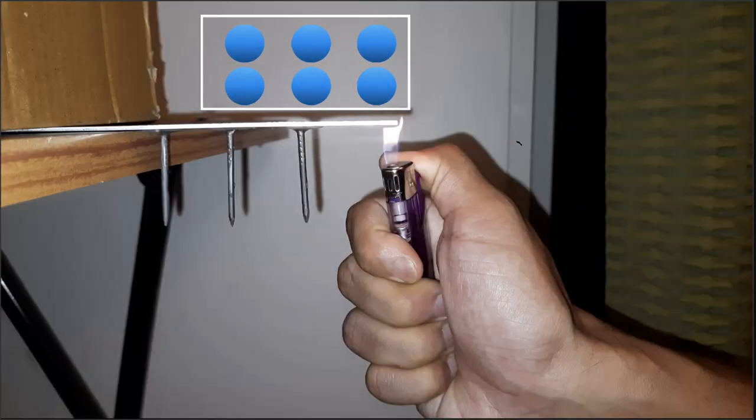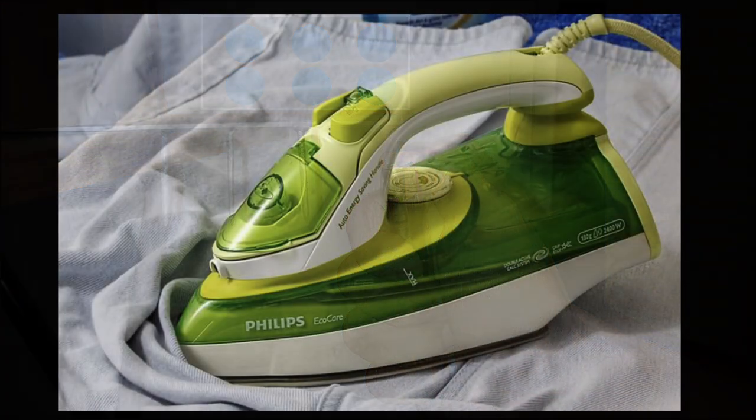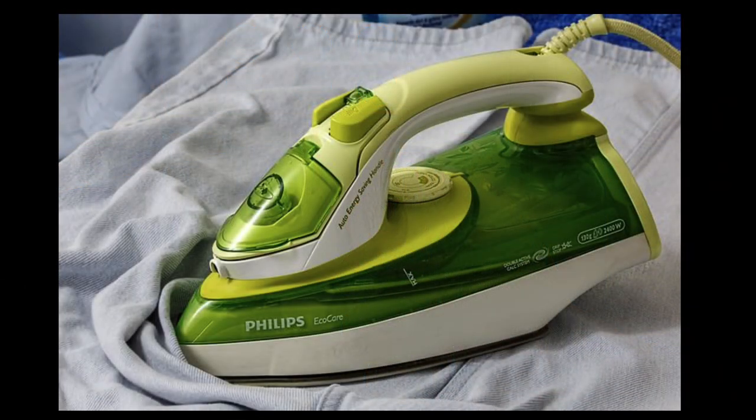This method of heat transfer which happens from atom to atom is called conduction. And this majorly happens in solids. We can see the signs of conduction around us. When we are ironing clothes, heat is transferred from the iron to the fabric through conduction itself. And this allows the fabric to relax and then it flattens. That is how ironing works through conduction.